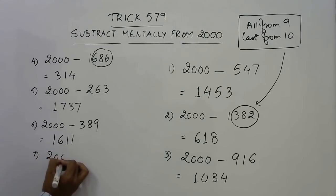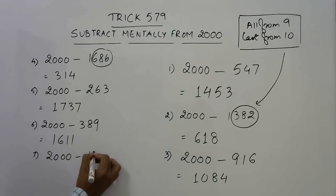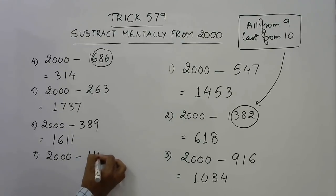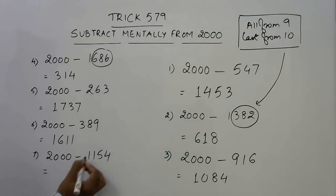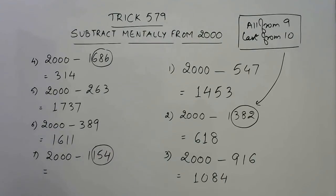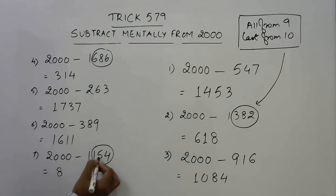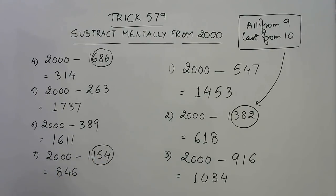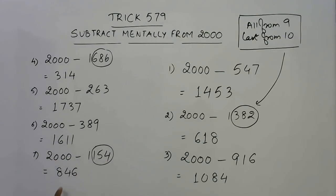Say we have to subtract 1154 from 2000. Leave the leading 1, and in the remaining three digits apply the same rule: 9 minus 1 is 8, 9 minus 5 is 4, and 10 minus 4 is 6. So 2000 minus 1154 is 846.